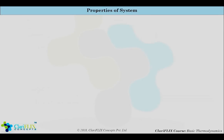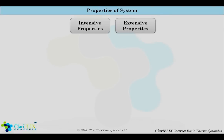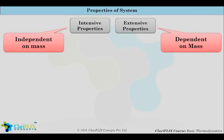Properties of system are divided into two types. First is intensive property and second is extensive properties. Intensive properties are the properties which are independent of mass, and extensive properties are the properties which are dependent on mass. To identify whether the property is intensive or extensive, consider a control volume having mass m, pressure p, volume v and temperature t.